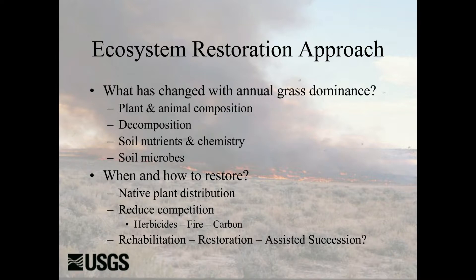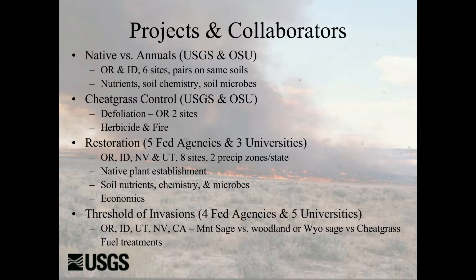Should we be doing restoration and rehabilitation projects, or should we be focusing toward alternatives? Valjo Anderson will be talking about assisted succession — I think that's an important component we need to look at more broadly across the West. A number of people have worked with us in this — there have been large cooperatives involving Oregon State University, Utah State, University of Nevada Reno, BYU, and several federal land management and research agencies. I want to acknowledge that this is not just my work — it's work done by a lot of these folks.